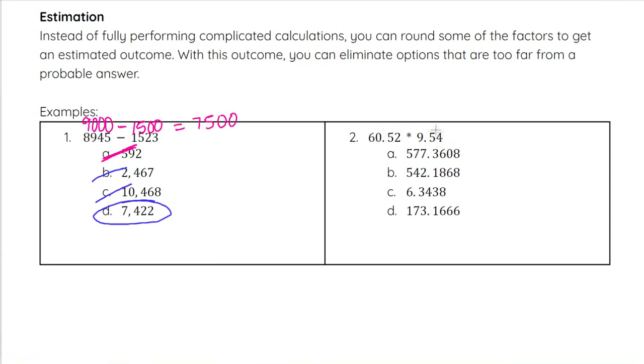Same concept with 60.52 times 9.54. If I round this to 60 times 10, those are pretty easy numbers to work with as opposed to these decimals. I could get an estimate and see if I could eliminate answer choices in that way. If I do 60 times 10, that's going to be 600. So I can pretty easily eliminate C and D. And depending on your comfort level, you may or may not be able to eliminate either A or B.